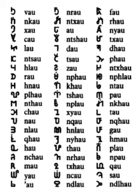The Paha Hmong alphabet was added to the Unicode standard in June 2014 with the release of version 7.0. The Unicode block for Paha Hmong is U+16B00–U+16B8F.